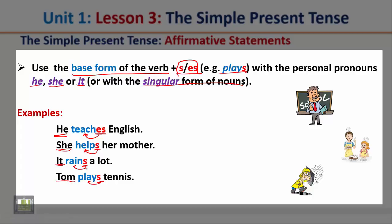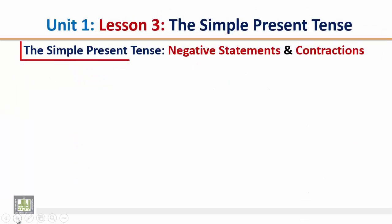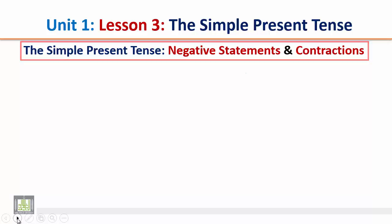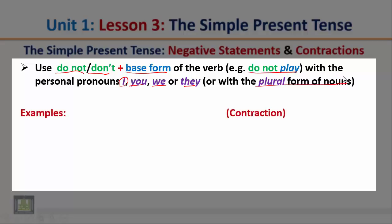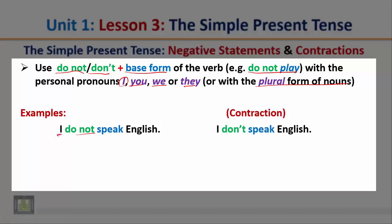The simple present tense — negative statements and contractions. Use 'do not' or the contracted form 'don't' plus the base form of the verb with the personal pronouns I, you, we, or they, or with the plural form of nouns. Examples: I don't speak English — notice we use 'do not' after the pronoun I. The contracted form is 'don't': I don't speak English.